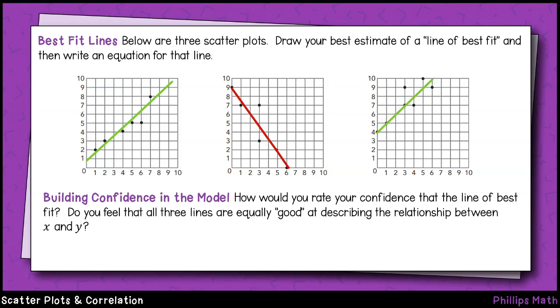In each case, however, the trend line, or the line of best fit, helps us visually see the type of correlation present. In the first and third plots, we see that as x increases, y gradually increases as well. This is a positive correlation.